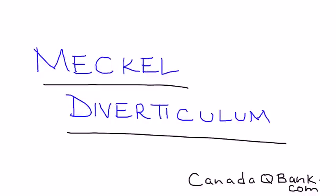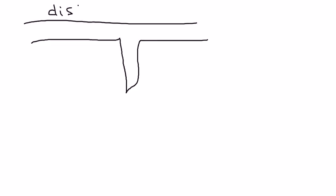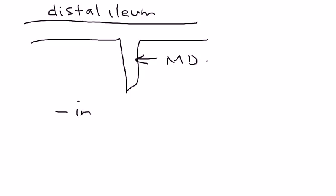Mechal diverticulum, abbreviated MD, is the topic of this video. Essentially, Mechal diverticulum happens embryologically — it's a diverticula that occurs in the distal ileum, affecting about 2% of the population as a congenital sacculation.